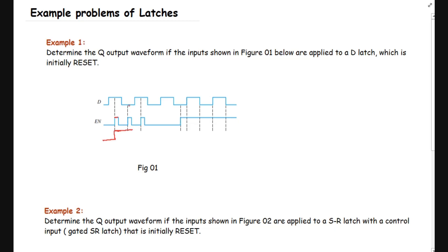Then another enable signal high level occurs, and now the data is low, so the output Q will be low. This will continue until another high-level signal occurs. Then the data level is high, so the data available signal will be transferred to Q. The enable is then low, so Q high will continue.